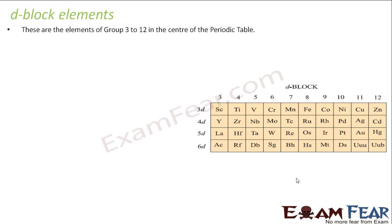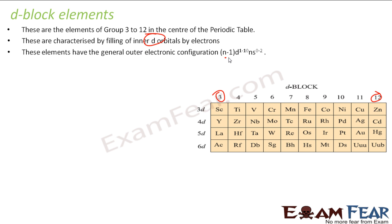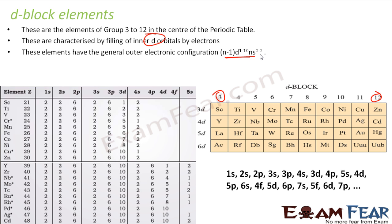Let us discuss the d-block elements. Group 3 to group 12 elements are my d-block elements, and they are characterized by filling of d orbitals. The outermost orbital is the d orbital and they have the electronic configuration n minus 1, d 1 to 10, and then s 0 to 2. The d orbitals are the ones which get filled.